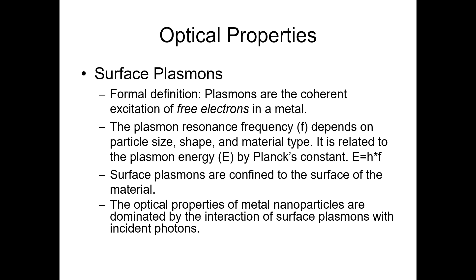The optical properties of metal nanoparticles and metal nanomaterials are dominated by the interaction of surface plasmons with the incident photons. When we have interactions between the surface plasmons and the incident photons in metallic nanoparticles or metal nanomaterials, this fundamentally affects the optical properties of that particular nanomaterial. Therefore, the role of surface plasmons is very important in understanding the optical properties of nanomaterials.